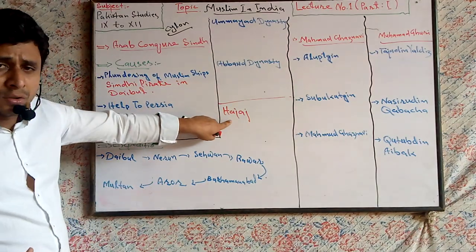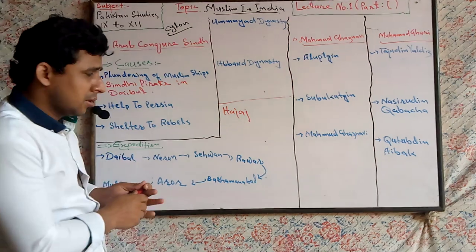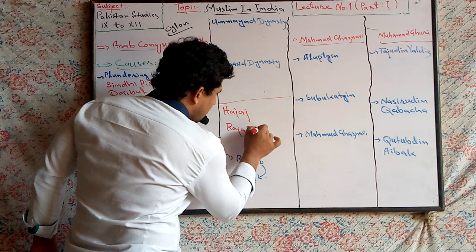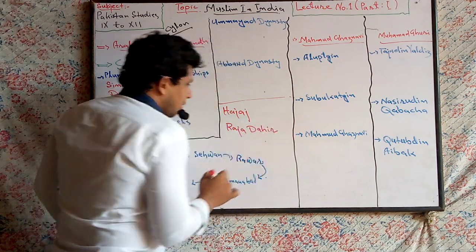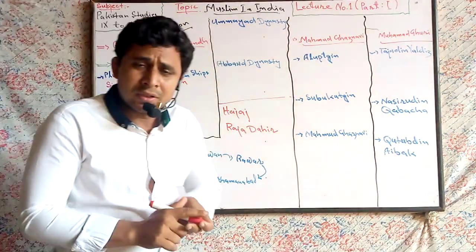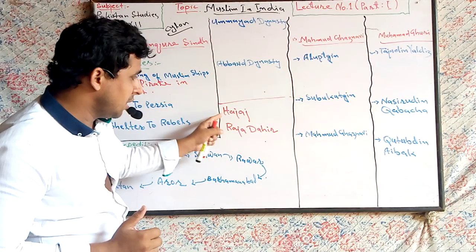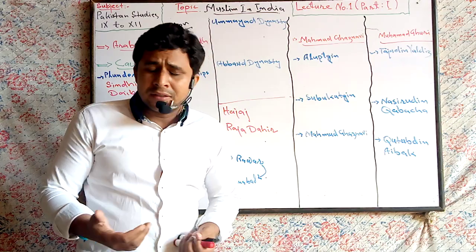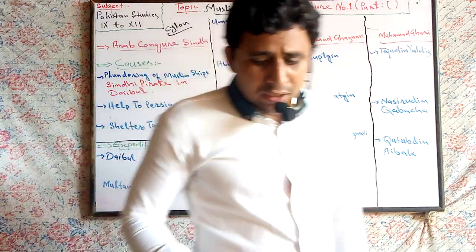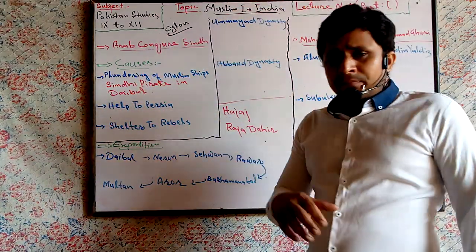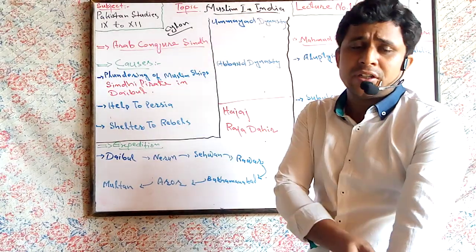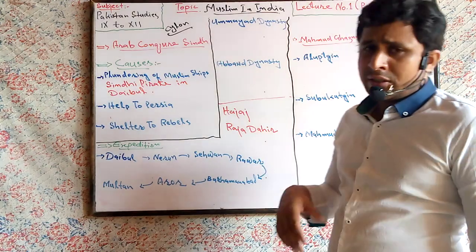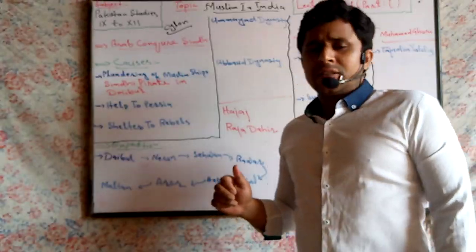In reply, Hajjaj wrote to Dahar. Raja Dahar was the ruler of Sindh. Hajjaj wrote to Raja Dahar to leave the orphans and widows and send them to the Islamic state Arabs, but Raja Dahar refused and Hajjaj decided to attack Sindh.